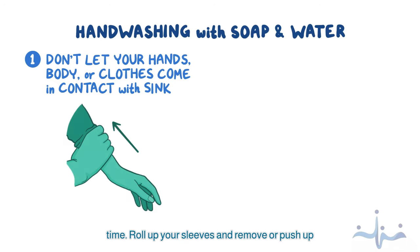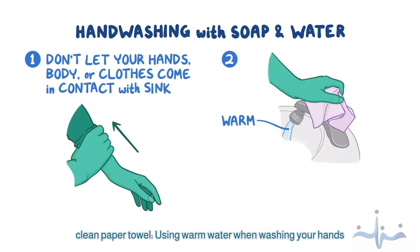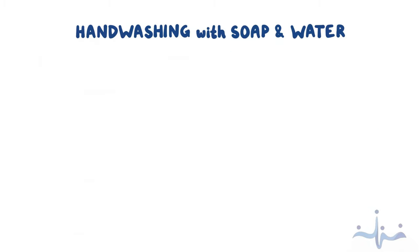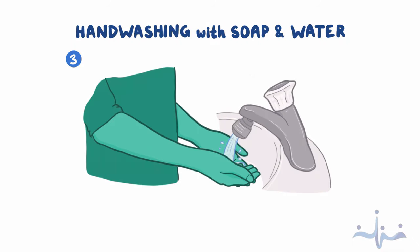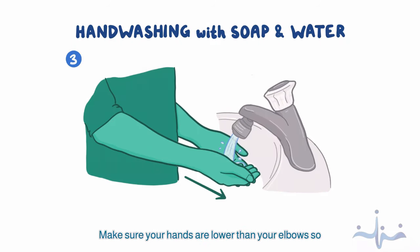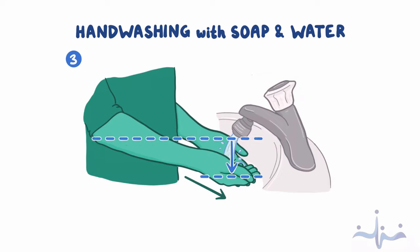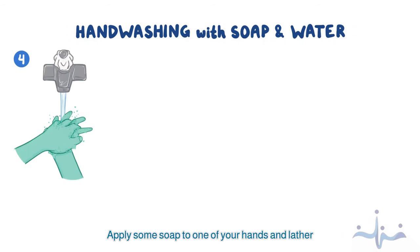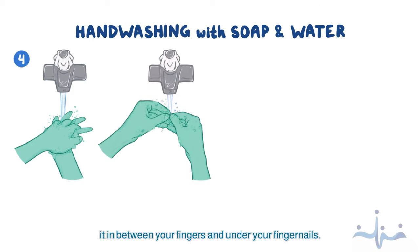Roll up your sleeves and remove or push up your watch if you are wearing one. You can then turn on the warm water with a clean paper towel. Using warm water when washing your hands helps to protect the oils in your skin. Dispose of the paper towel safely and according to your facility's policy. Place your wrists and hands under the running water and keep your fingers directed downwards.